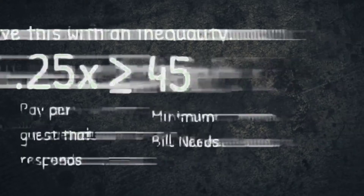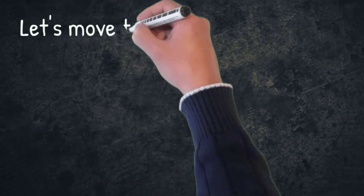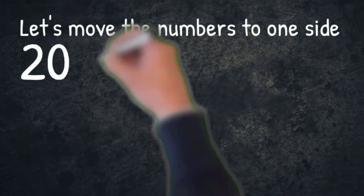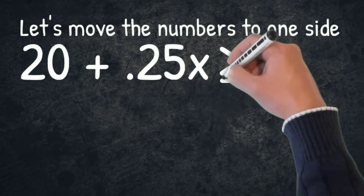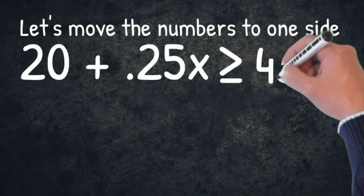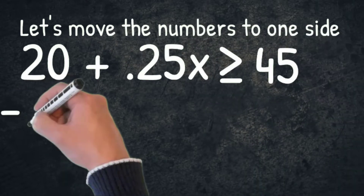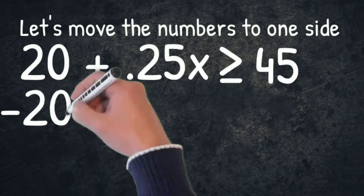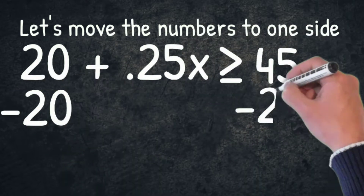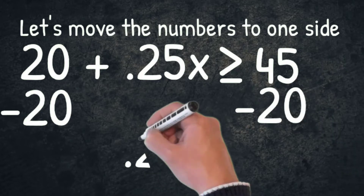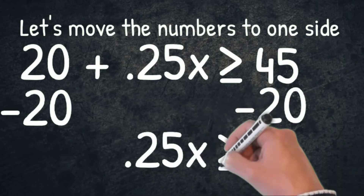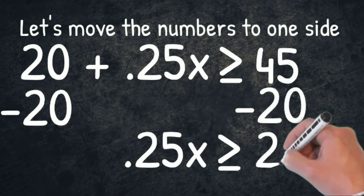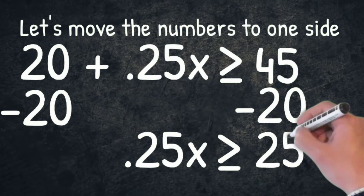At this point let's simplify by moving the numbers to one side. Let's start by taking the 20 and subtracting it from both sides. That'll leave us with 0.25x on one side and the value 25 on the other.